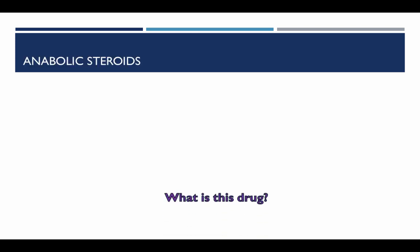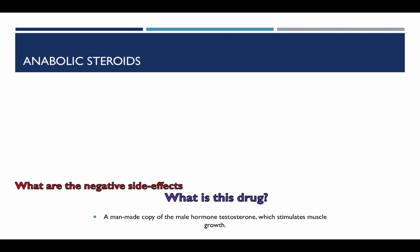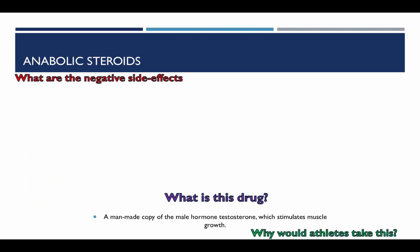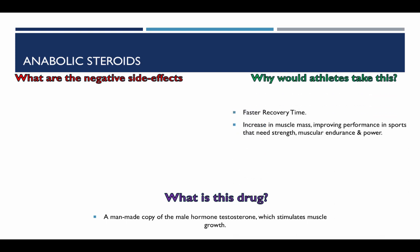Anabolic steroids. What is this drug? This is a man-made copy of a male hormone, testosterone, which stimulates muscle growth. An athlete would take these for faster recovery time, increasing muscle mass, and improving performance in sports that need strength, muscular endurance, and power.